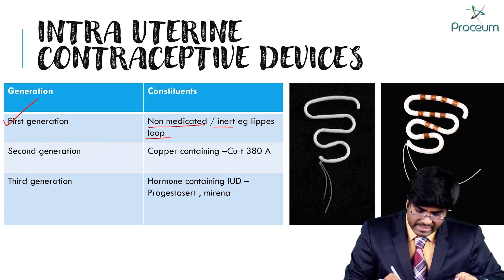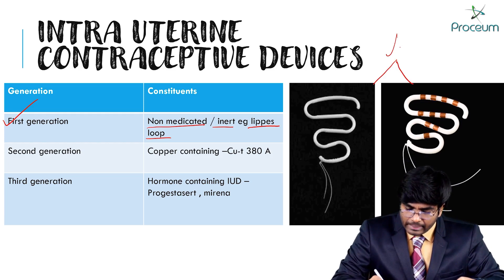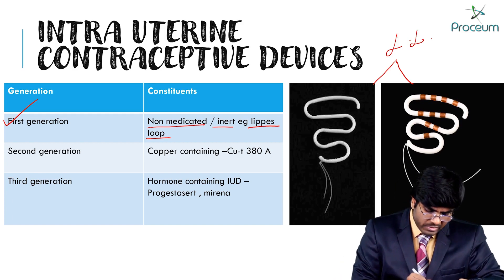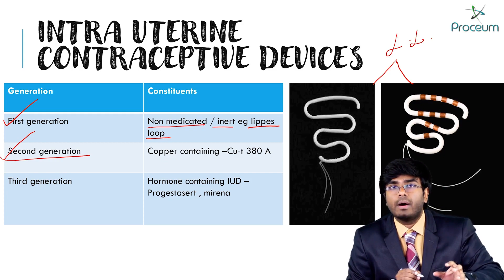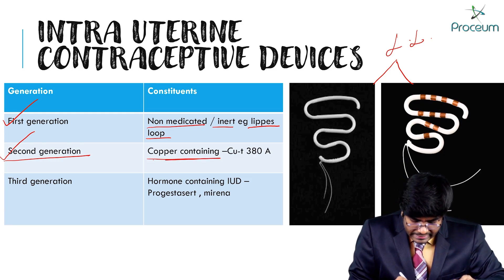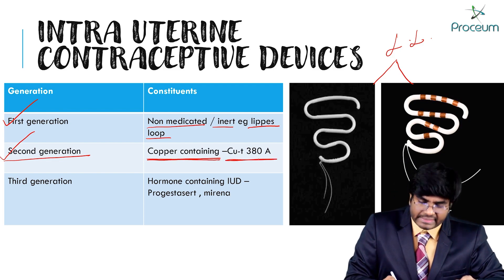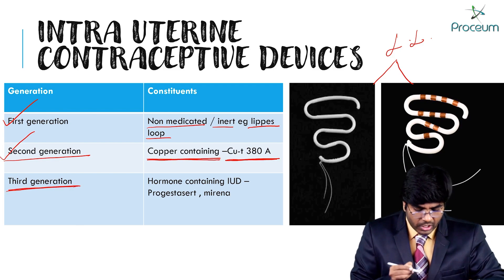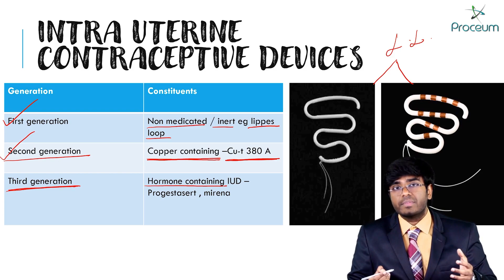An example of a first generation IUCD is the Lippes Loop. They can ask you an image-based question on this. Second generation IUCDs contain copper. An example is the Copper T380A.